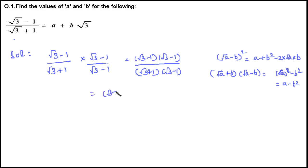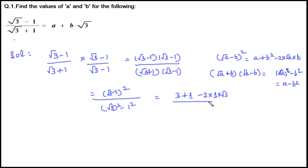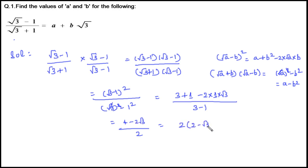Applying these identities: the numerator is (√3 − 1)² and the denominator is in the form of that identity, so it is √3² − 1². Applying the identity, the numerator becomes 3 + 1 − 2(1)(√3), and the denominator simplifies to 3 − 1. That equals (4 − 2√3) / 2. We can take 2 as a common factor, giving 2(2 − √3) / 2, which cancels to 2 − √3.